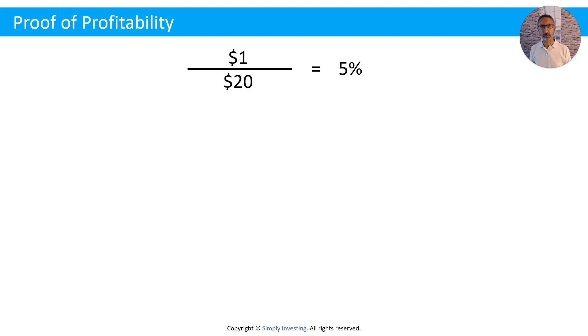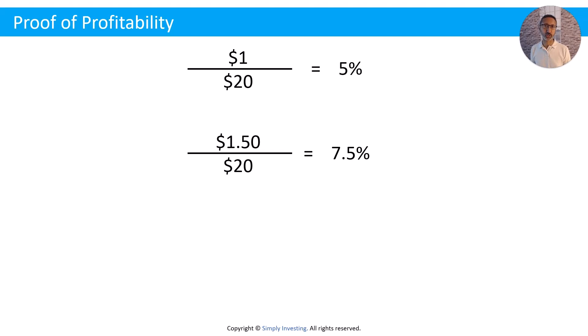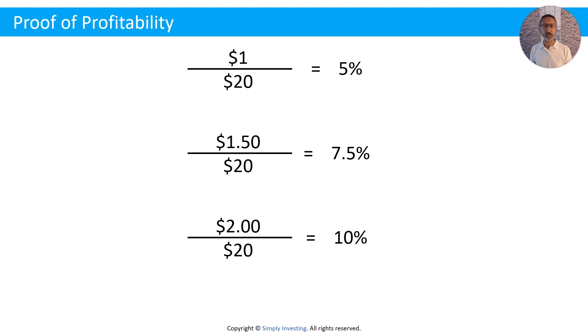Now let's see what happens when the company increases the dividend. If the dividend goes from $1.00 to $1.50, and your purchase price is still $20, then $1.50 divided by $20 equals 7.5%. If the company increases the dividend again to $2.00, then $2 divided by $20 equals 10%. So every time the company increases its dividend, your dividend yield goes up — from 5% to 7.5% to 10% return on your investment.